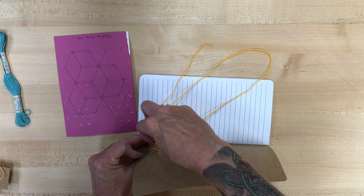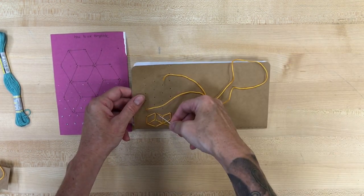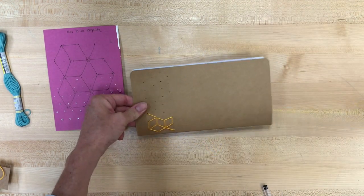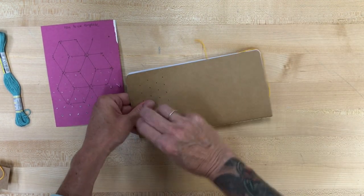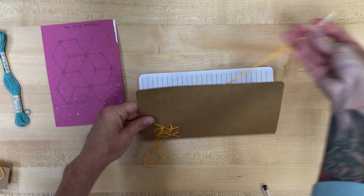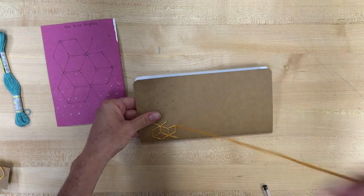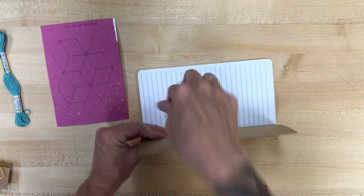And when you come to the end of your thread, that's what the tape is for. So you'll go ahead and push your needle through to the back, the backside, the messy side of the notebook, and just go ahead and tape that down. And then you'll rethread your needle and start again wherever you left off in your pattern or if you're ready to start a whole new pattern.